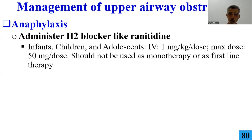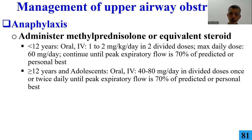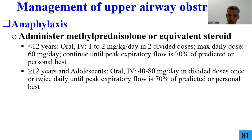Please remember: do not give cortisone (hydrocortisone) in asthma. Cortisone will not function well in asthma. Use oral prednisolone or methylprednisolone, and if you don't have both, you can use dexamethasone. Hydrocortisone is only for diseases in the blood — it's not meant for bronchospasm. It might work slightly, but not as well. When you have asthma, do not give hydrocortisone.